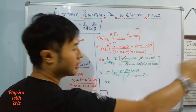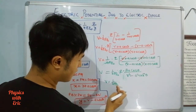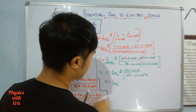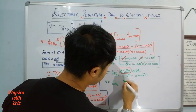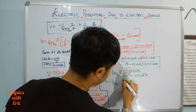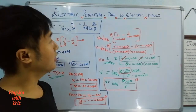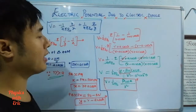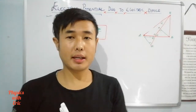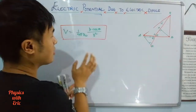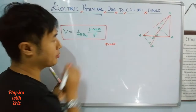Since 2a is very small, the term a squared cos squared theta can be completely neglected compared to r squared. So the denominator becomes simply r squared. The expression 2aq is the dipole moment denoted by p. Therefore V equals 1 by 4 pi epsilon naught times p cos theta divided by r squared.